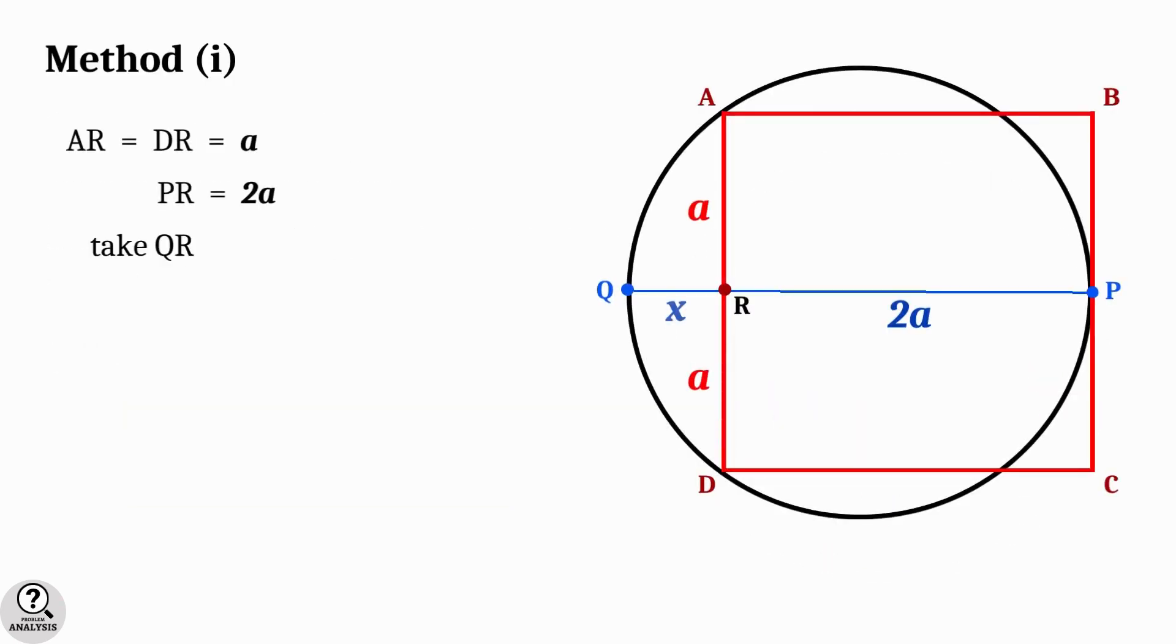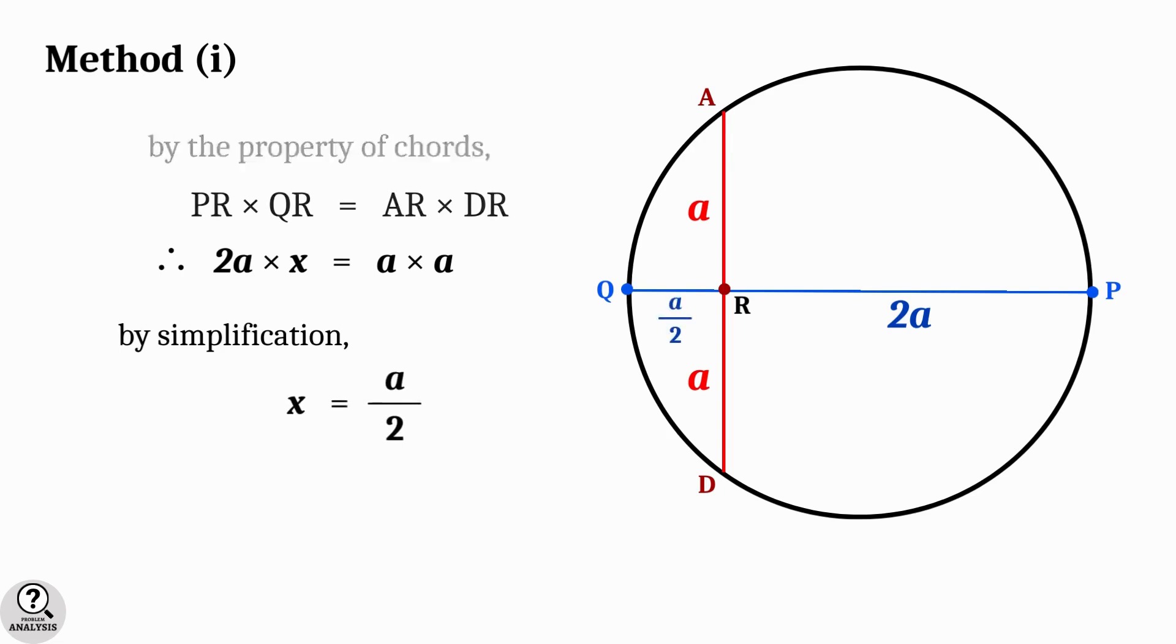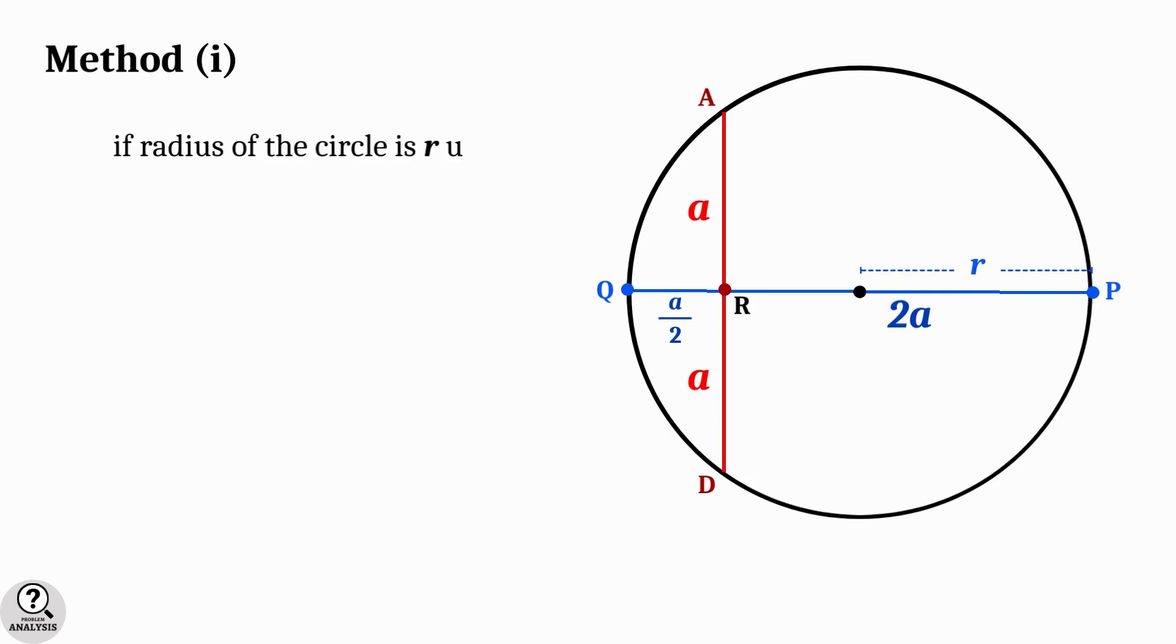Coming back to the figure, let's take QR equal to x units. Now observe the chords AD and PQ. By the property of chords, PR into QR is equal to AR into DR. Therefore 2a into x equal to a into a.